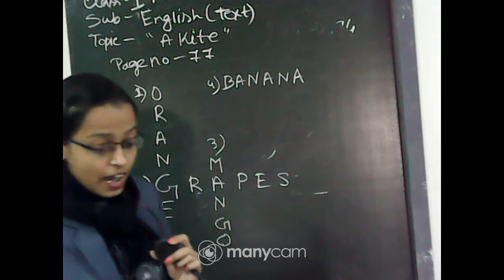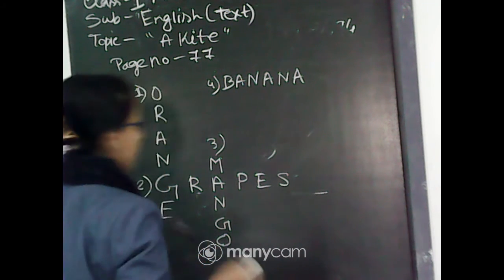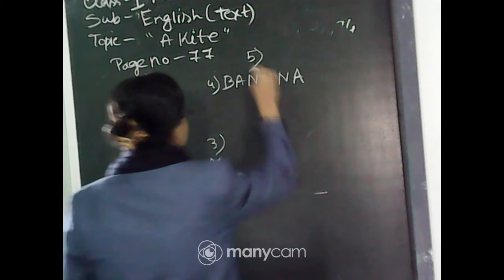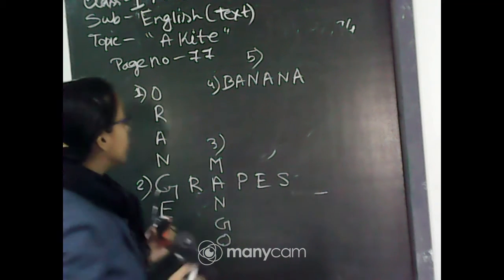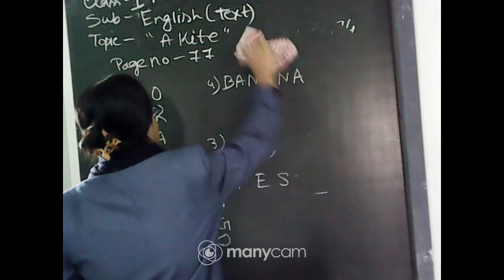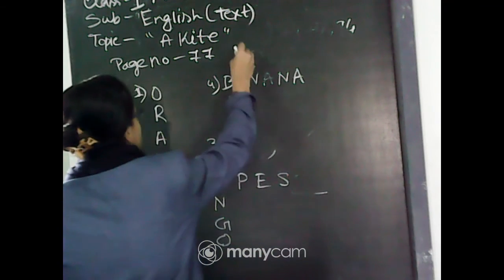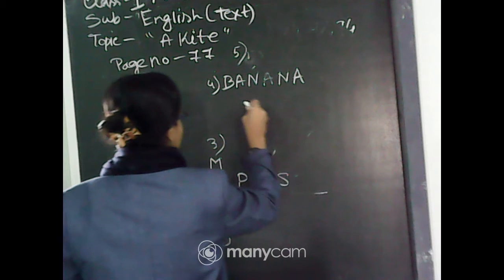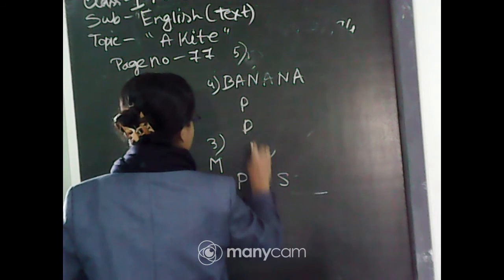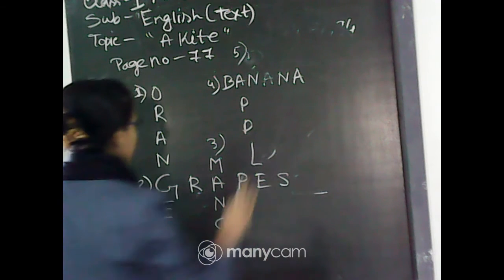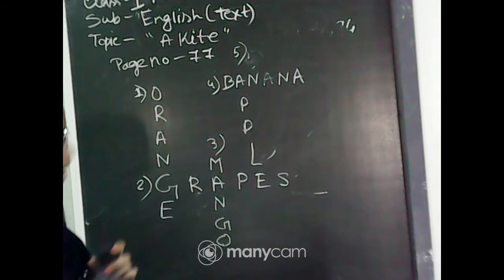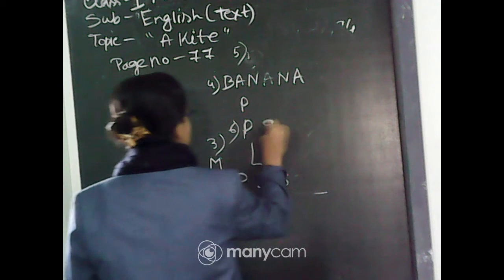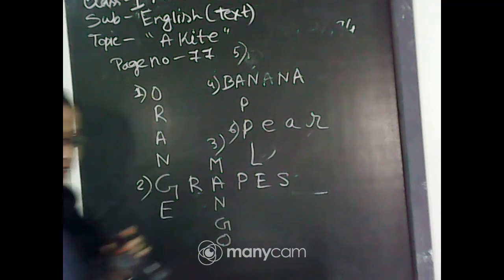And number 5 up-down will be, from the head of A, that is apple: A-P-P-L-E, apple. Number 5 will be apple. And number 6, from here, it will be pear: P-E-A-R, pear.